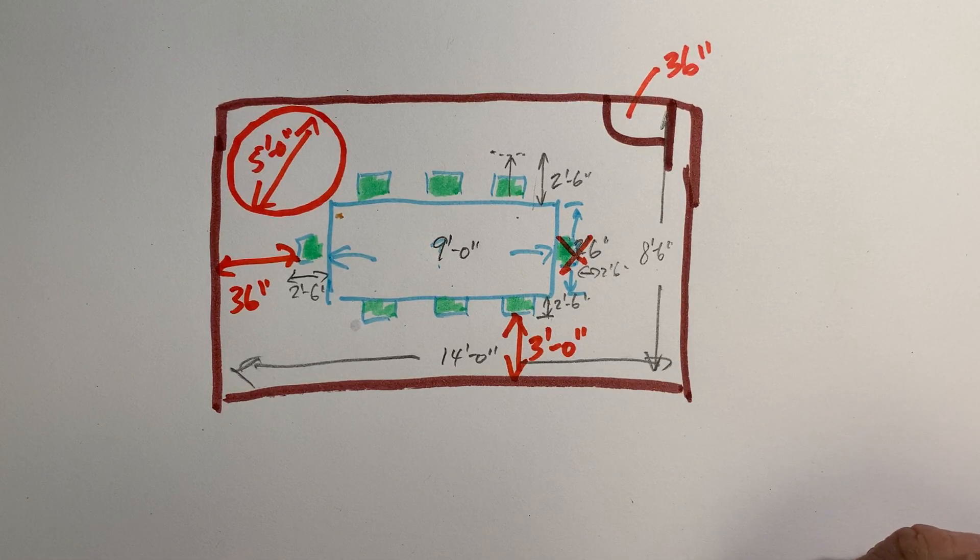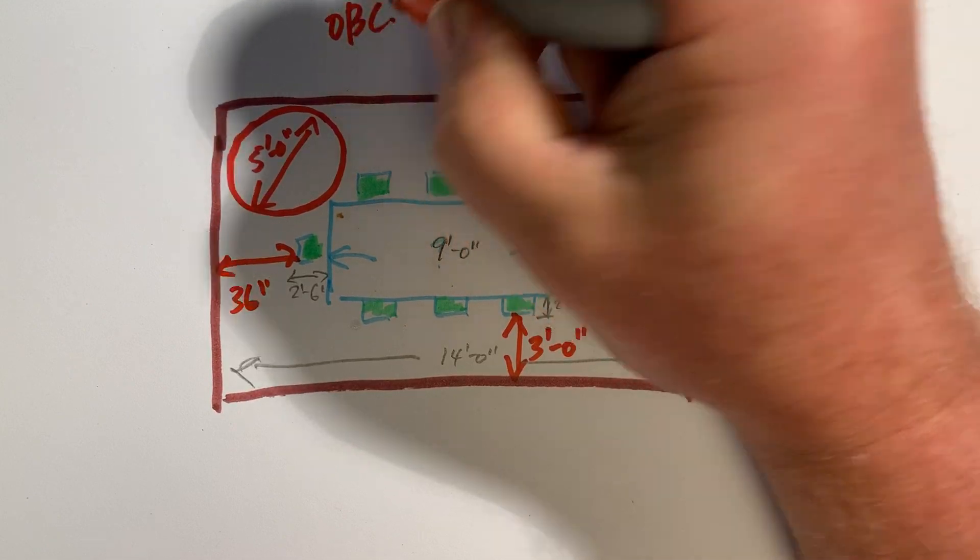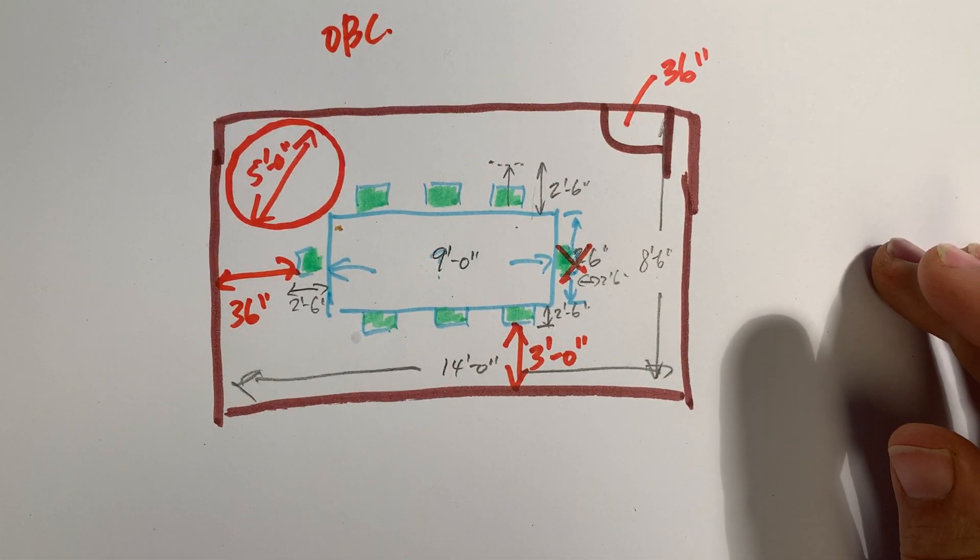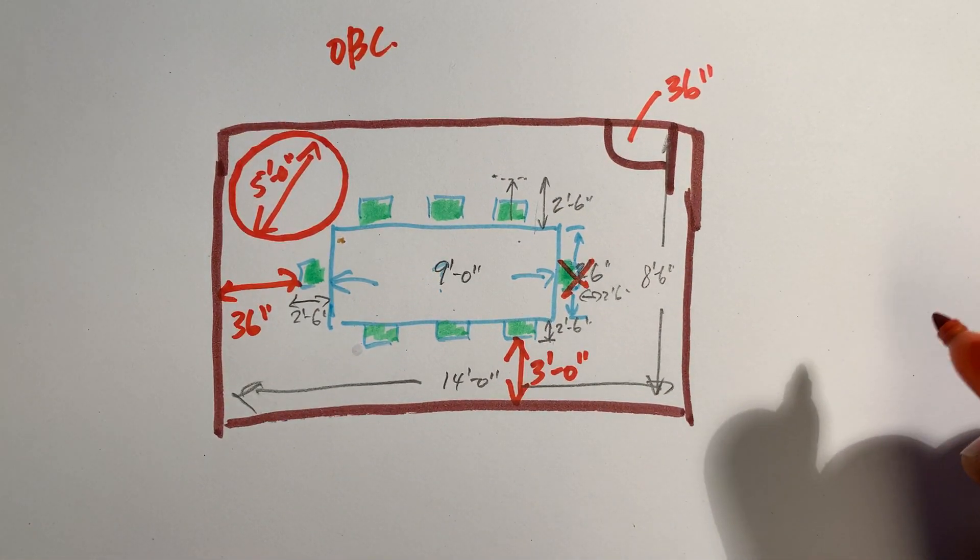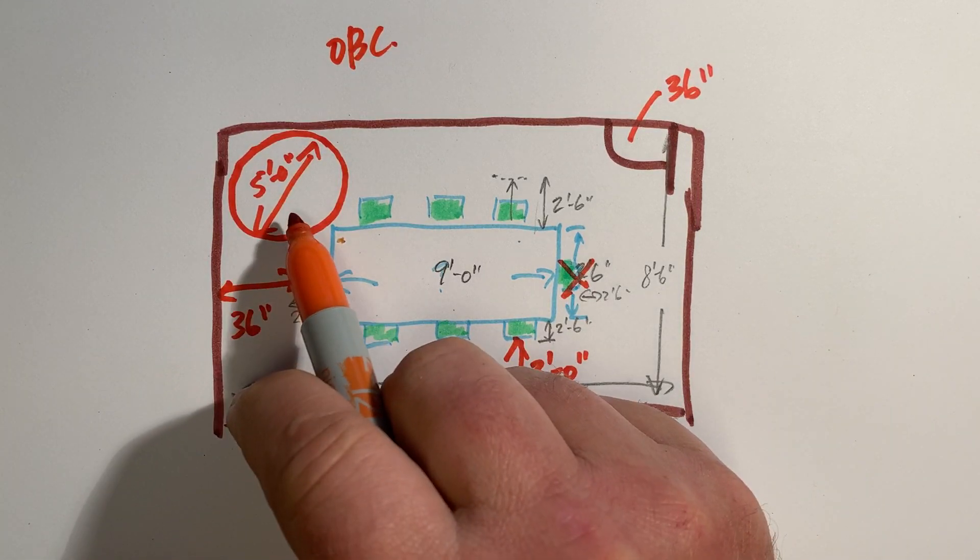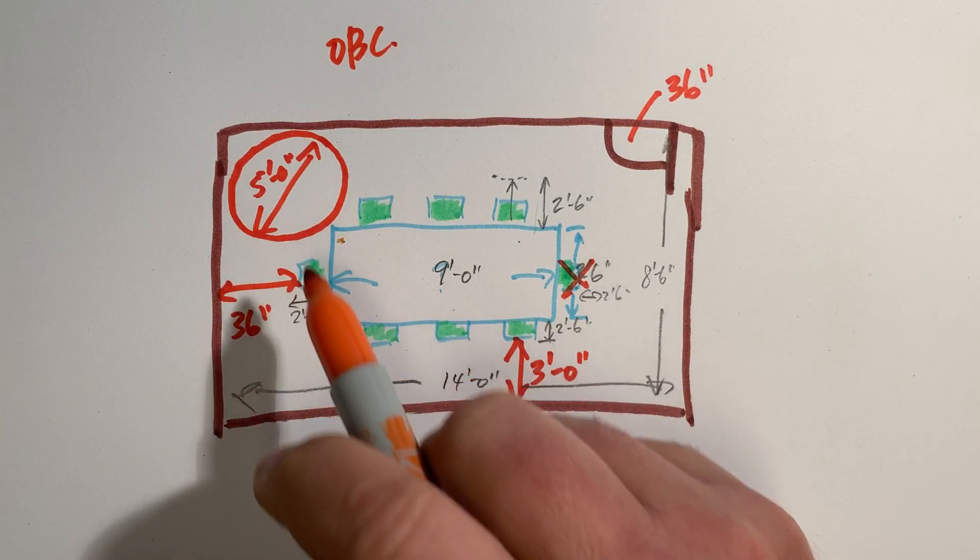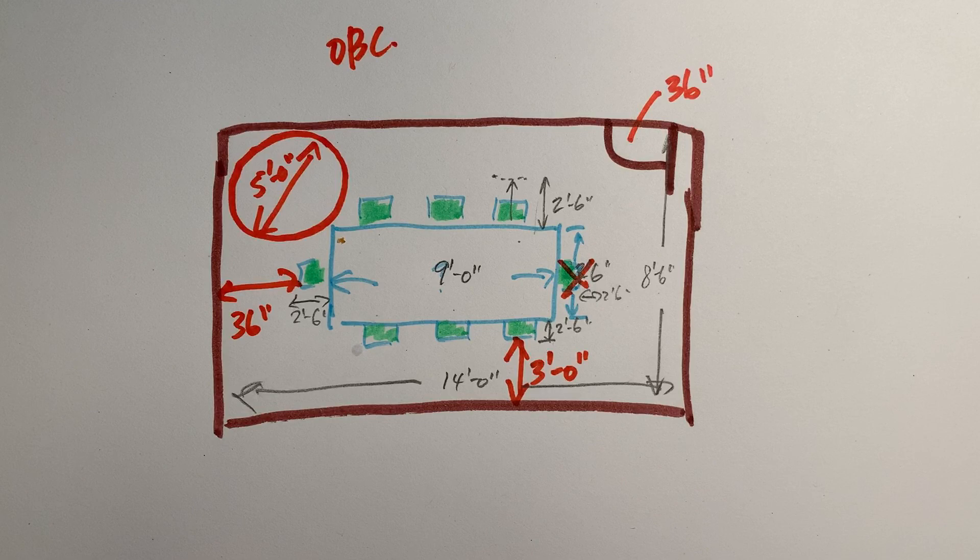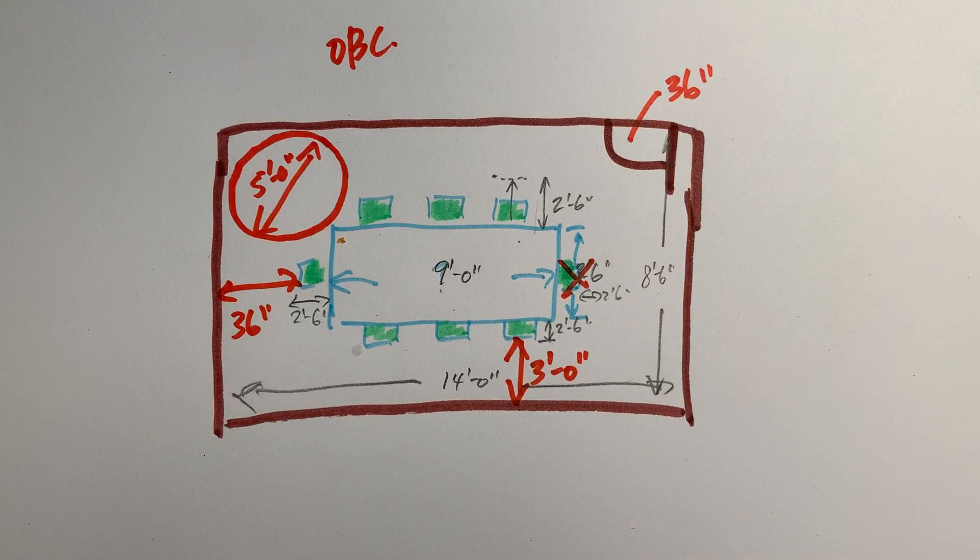When you're designing and planning this thing out, key things to remember from an OBC point of view for your barrier-free accessibility: your five-foot turning diameter, 36 inches for any hallway widths or for any circulation path of travel anywhere within the cottage, and any doors need to be 36 inches wide as well.